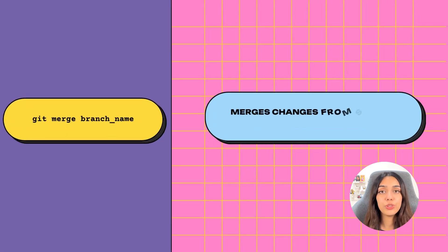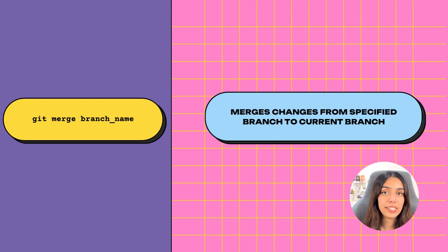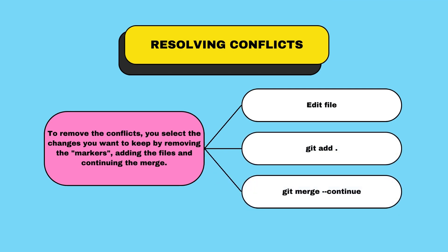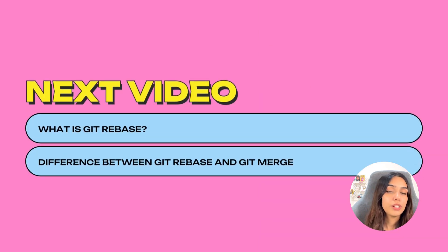To merge a branch, check out to the destination branch and use git merge followed by the source branch name. If you encounter merge conflicts, remove the branch decorators, select the desired change, add the changes using git add, and finish the merge using git merge --continue. That's the end of this video. In the next video I'm planning to cover the git rebase command. See you in the next one.